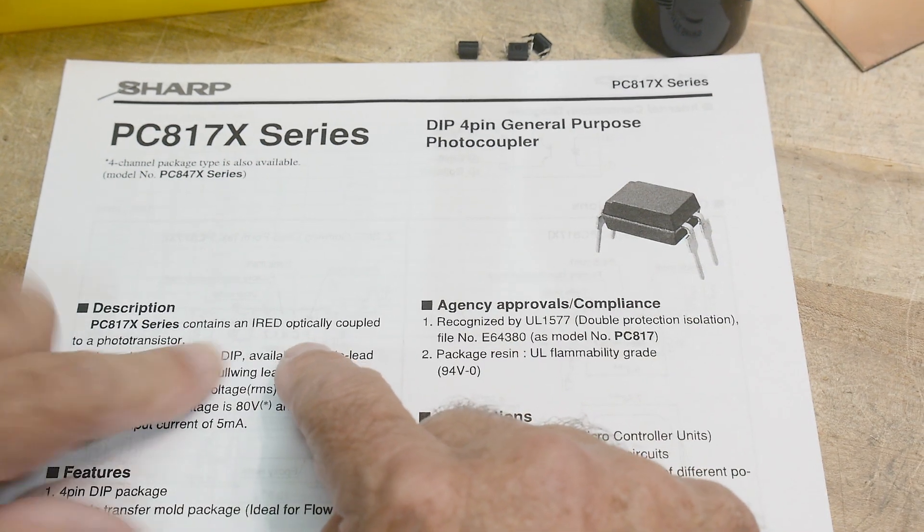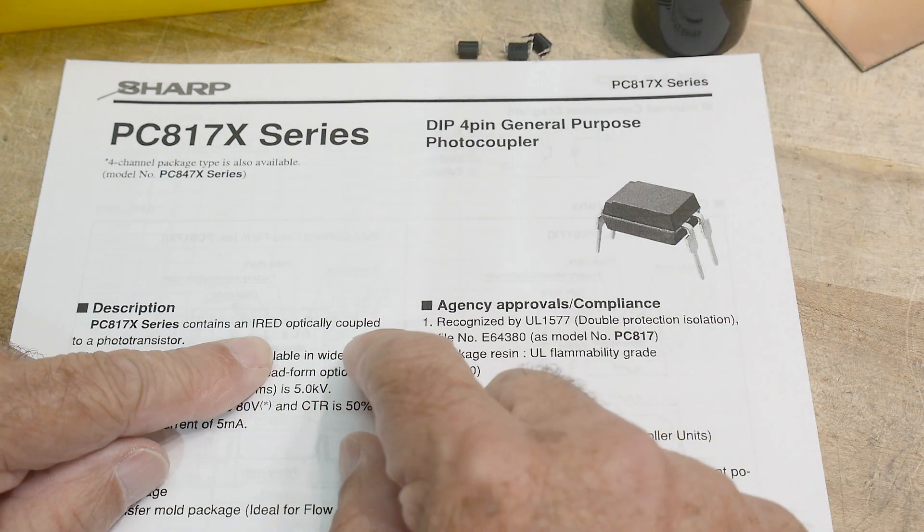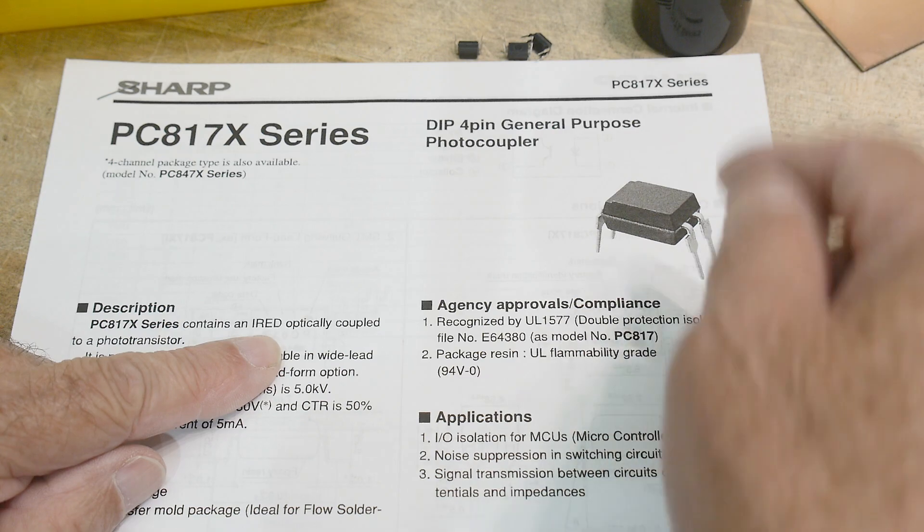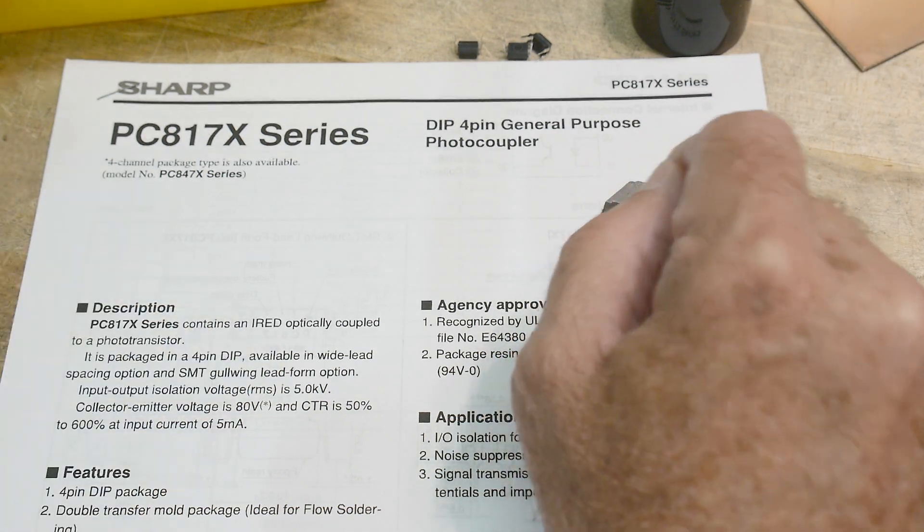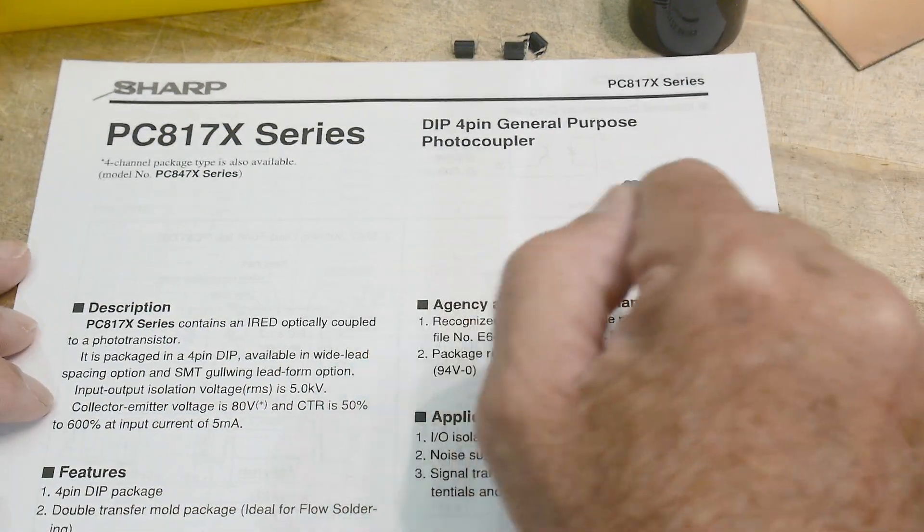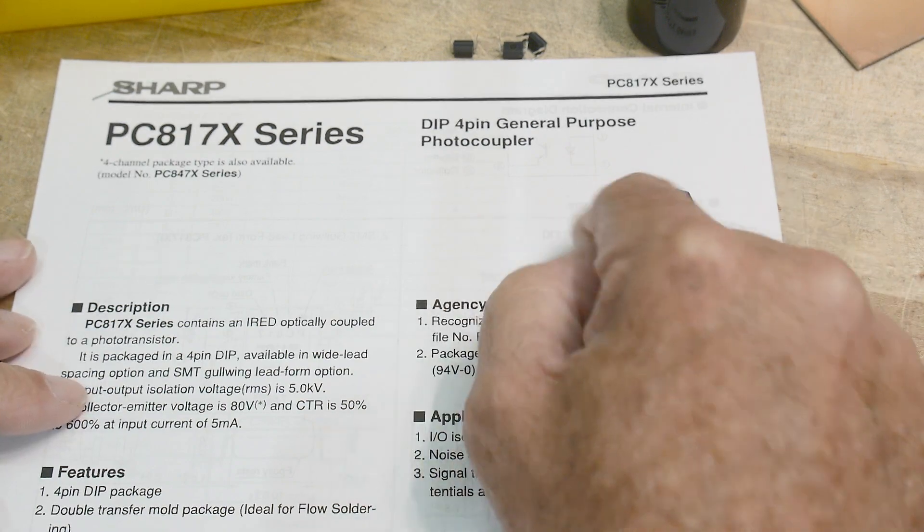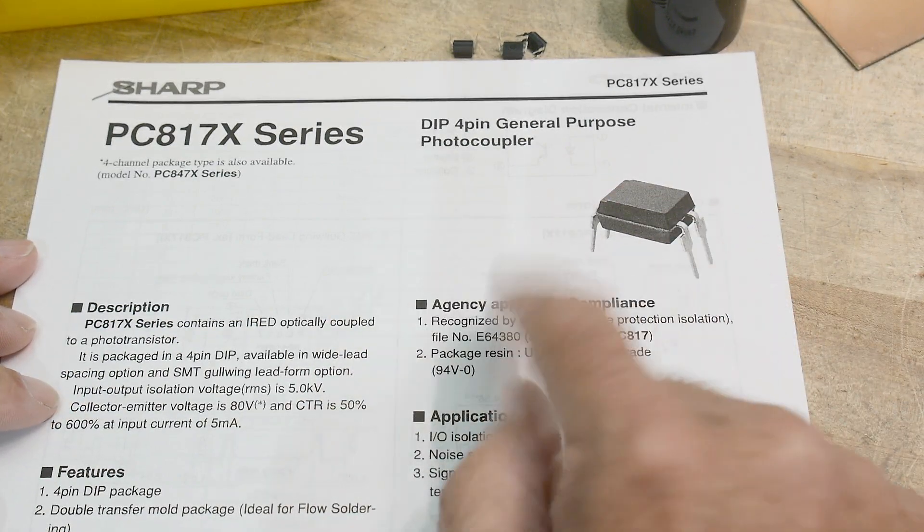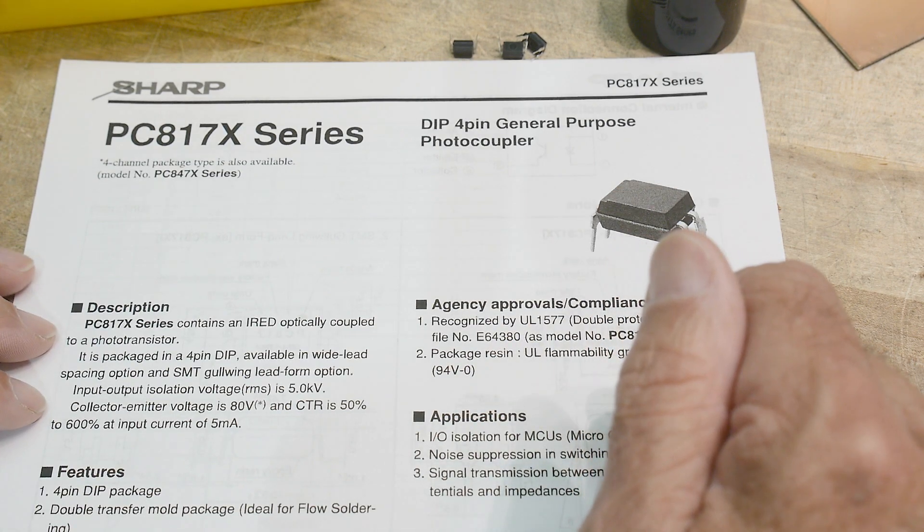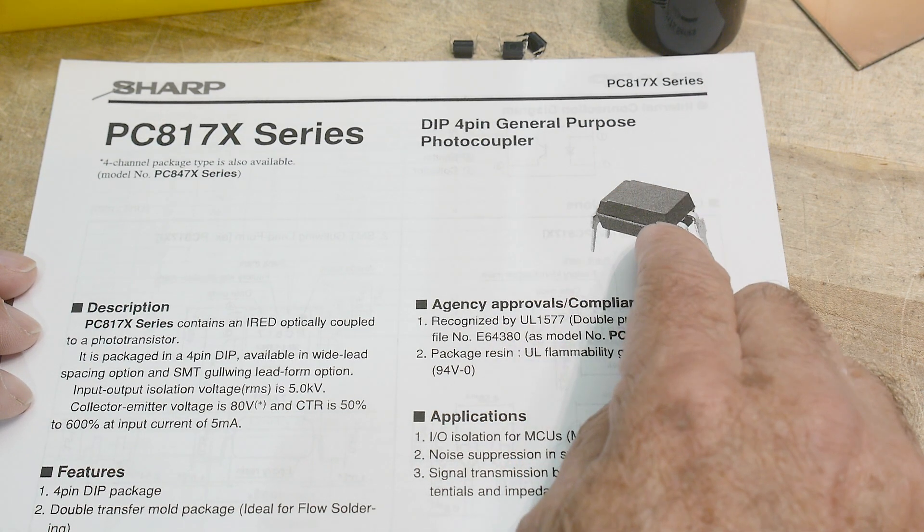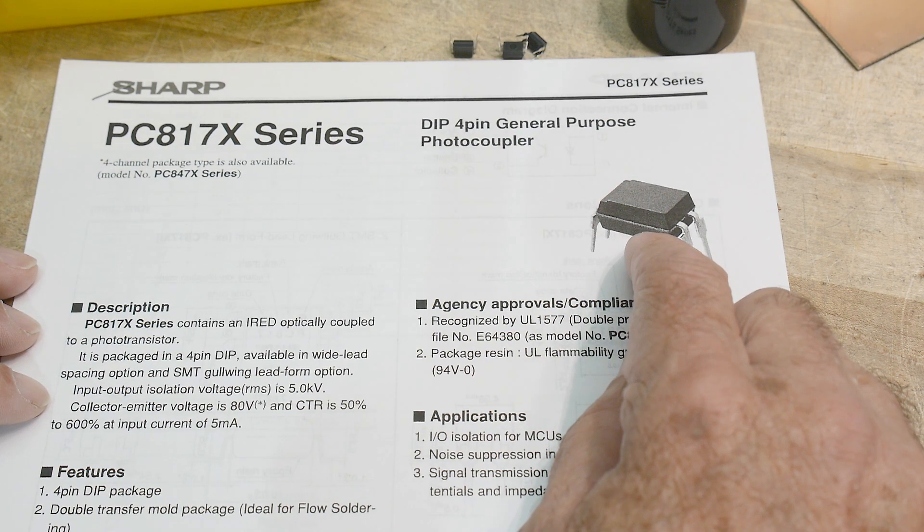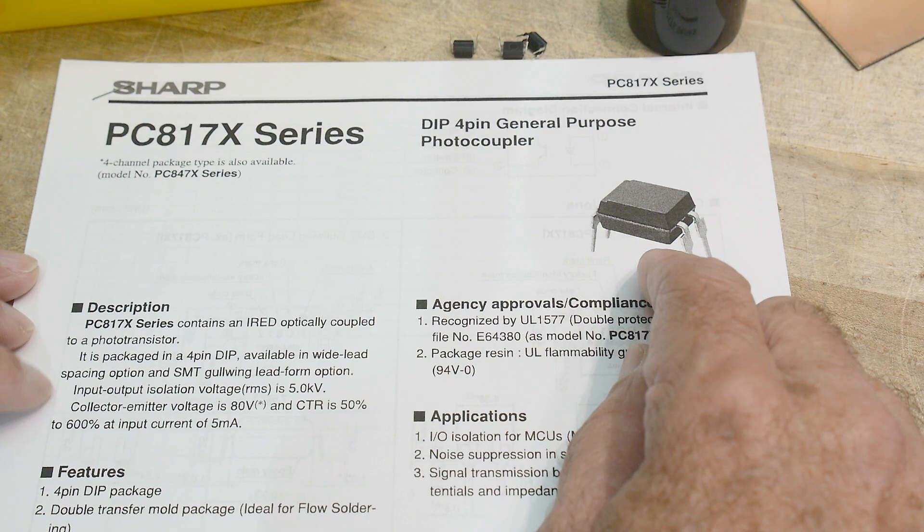It uses an infrared LED. I had a comment on one of my videos when I was talking about these optocouplers are often used for the feedback path in a switching power supply, the feedback for the voltage. And I mentioned a forward voltage of one volt. And somebody says, there's no such thing as an LED that has a forward voltage of one volt.